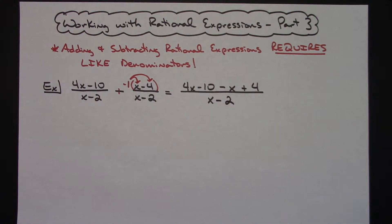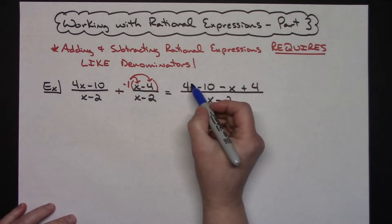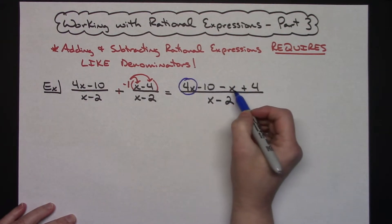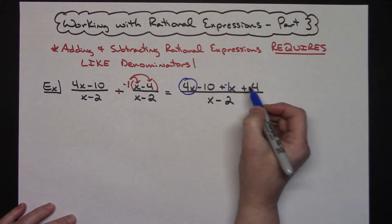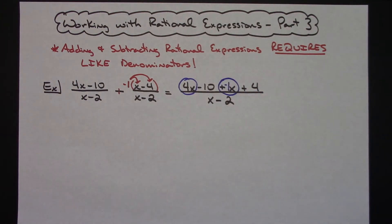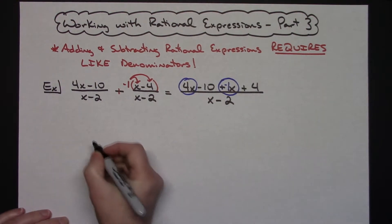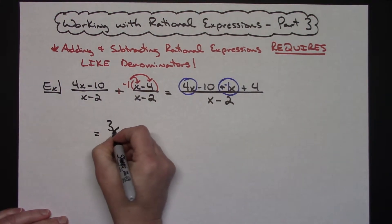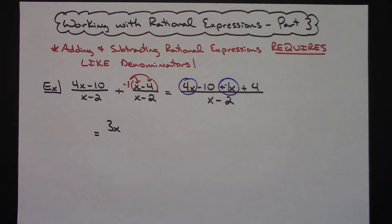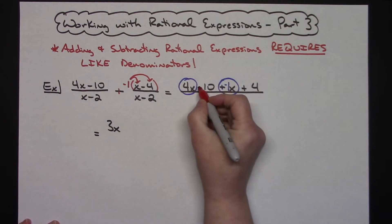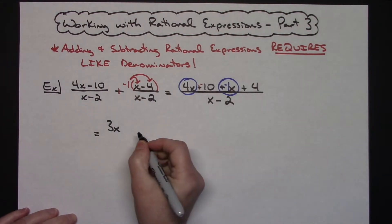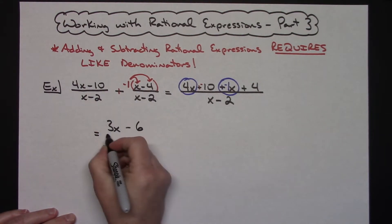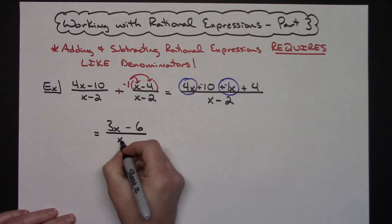Then I'm going to go through and combine like terms. I see a 4x, and keeping in mind that the negative in front makes it a negative x, putting those two together gives me 3x. Then I put the two constants together — paying attention to the sign — that's a minus 10 plus 4, giving me minus 6, all over x minus 2.